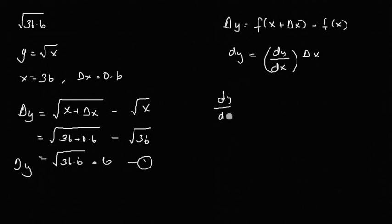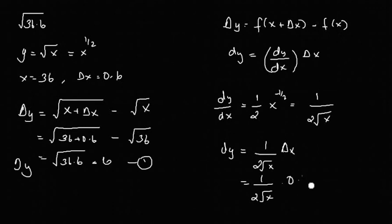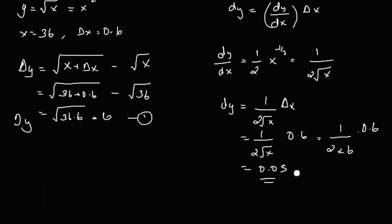Now we compute dy by dx. For y equals root x, dy by dx equals 1 over 2 root x. So dy equals 1 over 2 root x times Δx, which is 1 over 2 times 6 times 0.6. This gives dy approximately equal to 0.05. Therefore Δy is approximately 0.05.